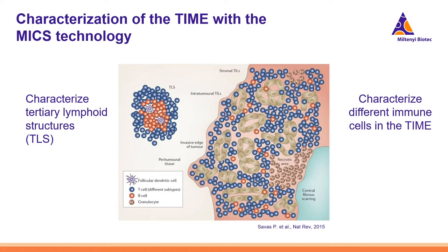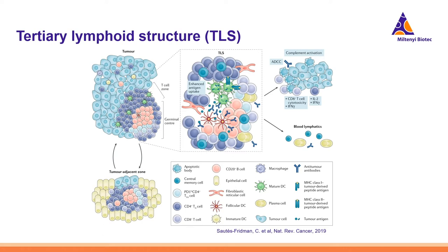There are two main aspects I would like to focus on today. First, I would like to show you a tertiary lymphoid structure. Afterwards, I will characterize the different immune cells on a specific type of a tumor immune microenvironment. The tertiary lymphoid structure is described here in further detail in a schematic representation. It shows the TLS located within a tumor with a CD3 positive T cell zone containing DC-LAMP dendritic cells, fibroblastic reticular cells, and a CD20 positive B cell zone with a germinal center, plasma cells, antibodies forming immune complexes with tumor antigens and follicular dendritic cells.